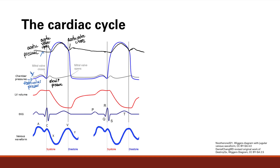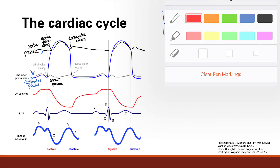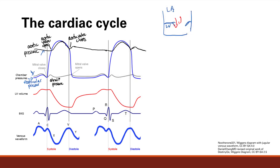We start during late diastole, where we have our left atrium and left ventricle. The valves are open and the left ventricle is being filled up with blood. The left ventricular pressure is going up until the point that it exceeds left atrial pressure, at which point these valves will close.